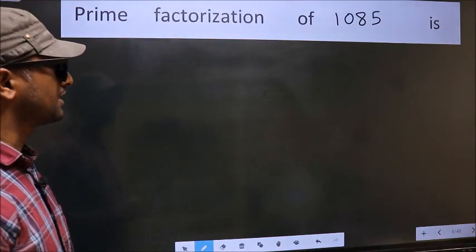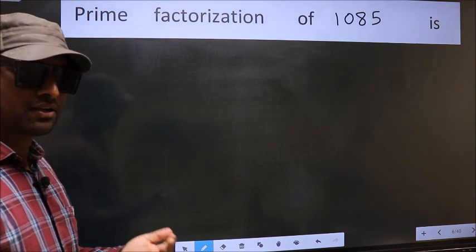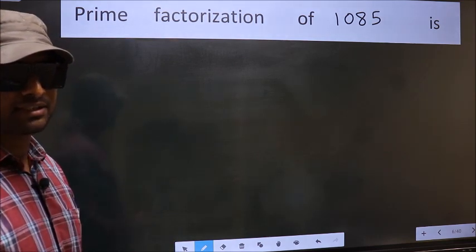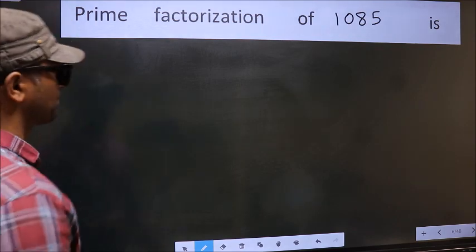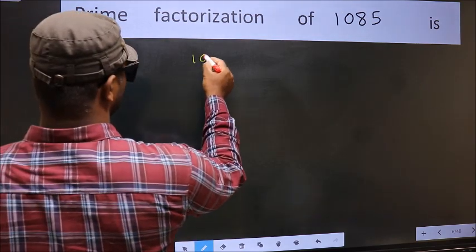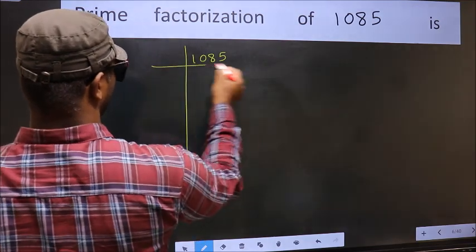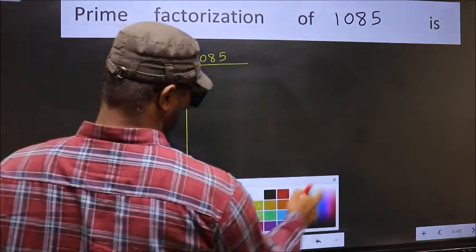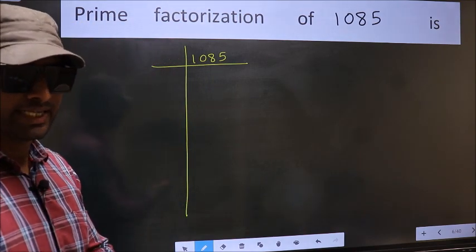Prime factorization of 1085. To do prime factorization, first we should frame it in this way. 1085. This is your step 1.